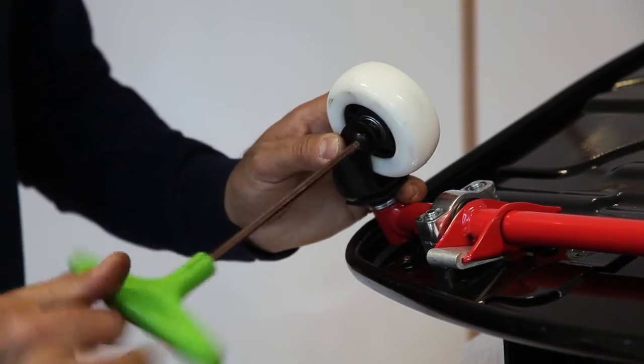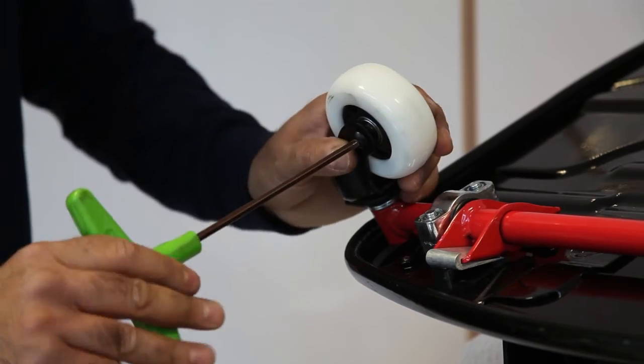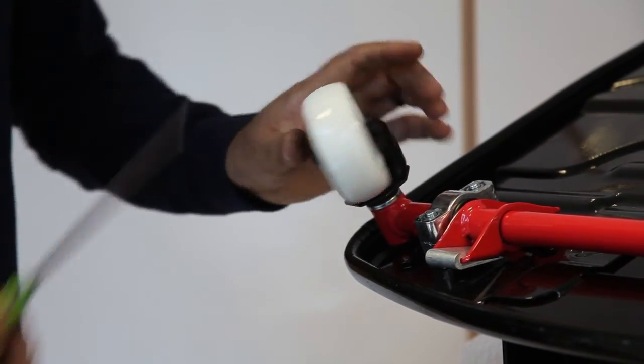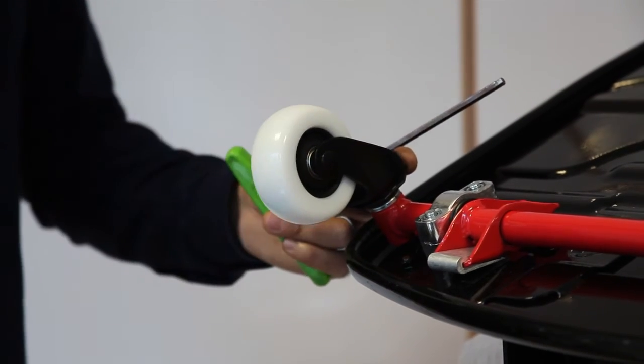Place the allen key side of the axle through and tighten up. Once it's almost tight, it just needs a quarter turn and that's your wheel replaced.